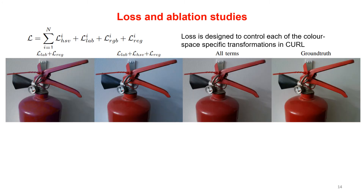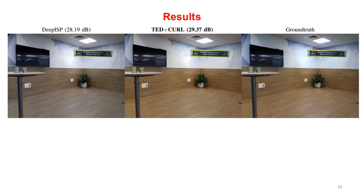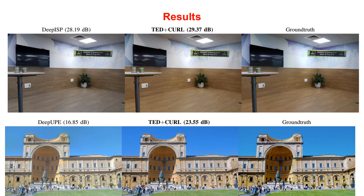Our paper includes ablation studies that show all terms in the loss produce the best result, in contrast to using a single color loss or different subsets. We also have an ablation study showing the proposed sequence of color spaces — LAB, RGB, HSV — produces the best result. Here are some qualitative results. We find TED plus CURL outperforms deep ISP in learning the raw-to-RGB mapping. We also compare CURL to other methods like deep UPE for RGB image enhancement and find that CURL produces state-of-the-art results that more faithfully reproduce the ground truth.